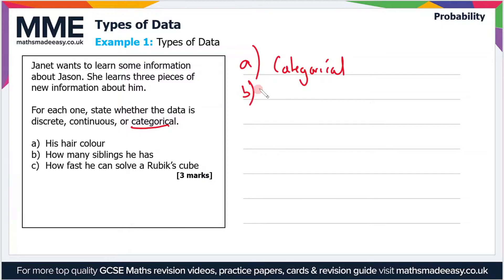And the next one, how many siblings he has. Well, it's numerical data first of all, so it's quantitative. Now is it discrete or is it continuous? Well, you can only have fixed numbers of siblings. You can't have half a sibling, so it's discrete.